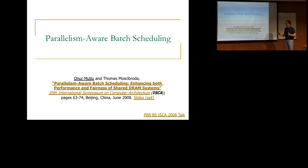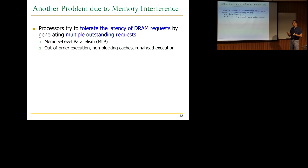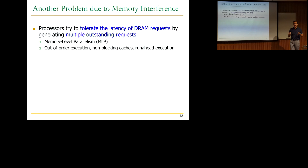Now let's move to something else — this is one of the next things we did when we were trying to understand the interference happening in the main memory system between different applications. I like this work a lot. This is the third paper I assigned because it's actually showing that some of the techniques you use to tolerate the latency of DRAM can become less effective or ineffective if your memory controller is doing something exactly opposite of what the processor is doing.